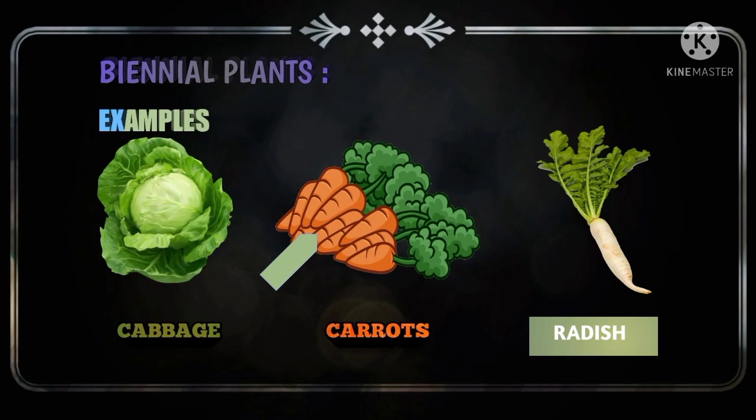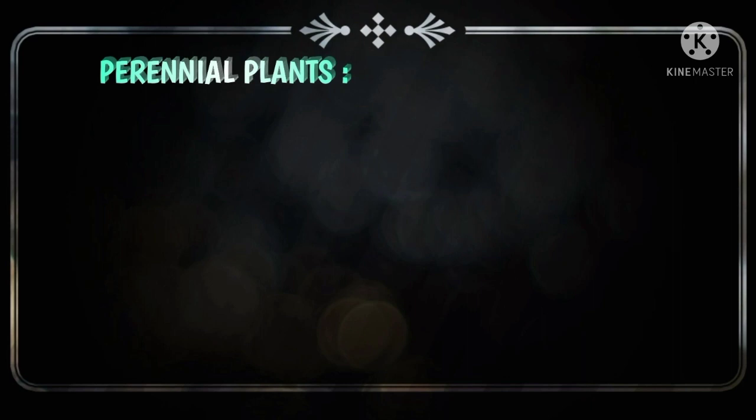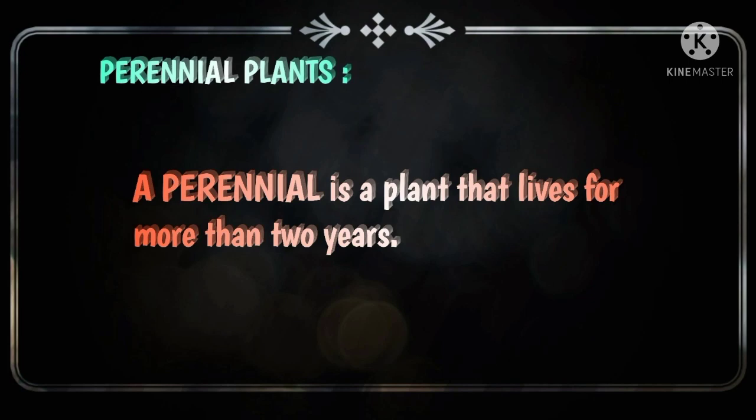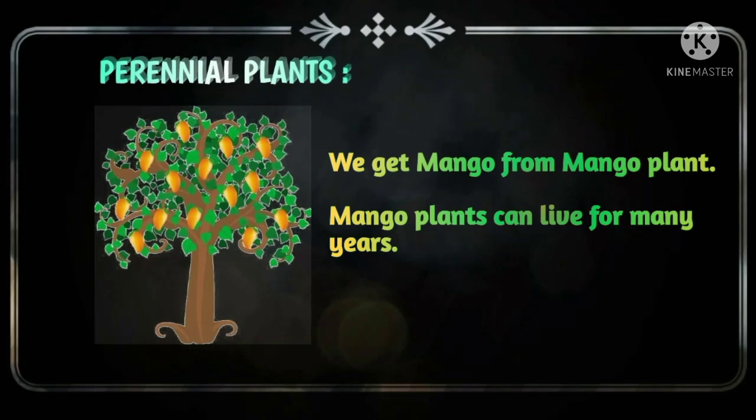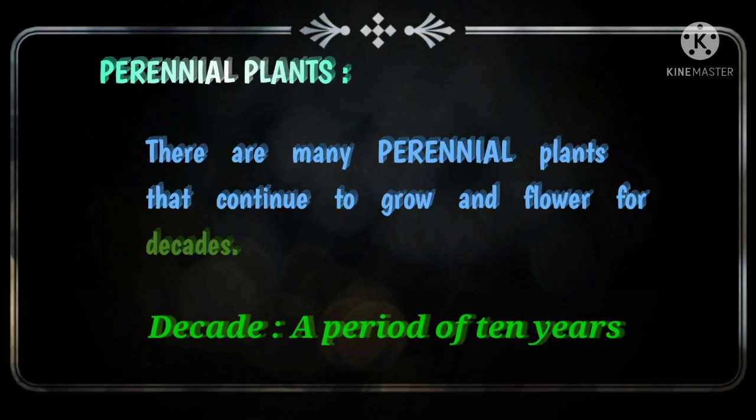Next, perennial plants. A perennial is a plant that lives for more than two years. We all love to eat the mango fruit — we get mangoes from the mango tree. A mango tree lives for many years. There are many perennial plants that continue to grow and flower for decades. Decade means a period of 10 years.